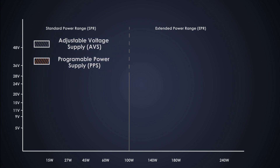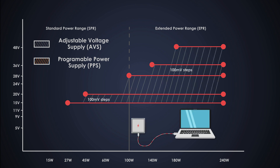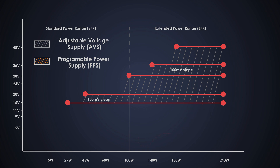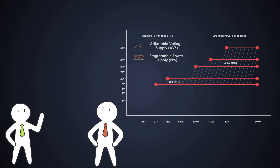AVS allows devices to fine-tune the voltage between 15 volts and 48 volts in 100 millivolt steps, so the connected device can adjust the voltage to meet its exact power requirement, improving both thermal efficiency and overall performance. AVS is used primarily in systems that require a constant voltage supply for a wide range of internal components. For example, if a product is best powered at 40 volts, instead of creating a custom USB PD charger, the product simply negotiates a 40-volt contract with a 48-volt EPR power adapter.